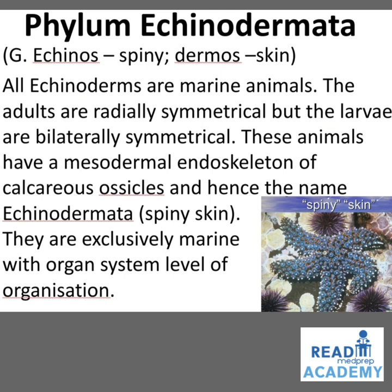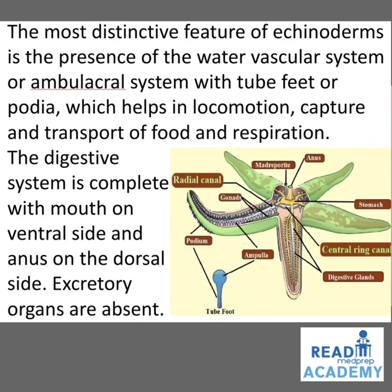Now let us move on to phylum Echinodermata. It's a Greek word: echinos means spiny, dermos means skin. All echinoderms are marine animals. The adults are radially symmetrical but the larvae are bilaterally symmetrical. These animals have a mesodermal endoskeleton of calcareous ossicles — hence the name Echinodermata meaning spiny skin. They are exclusively marine with organ system level of organization. The most distinctive feature is the water vascular system or ambulacral system with tube feet (podia) which help in locomotion, capture and transport of food, and respiration.